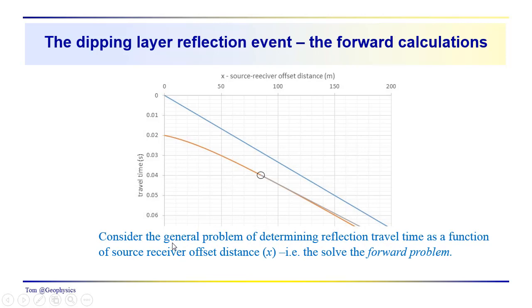So now we're going to consider the general problem: determining the reflection time-distance relationship as a function of reflection arrival times as a function of the source-receiver offset. This is often referred to as doing the forward problem.